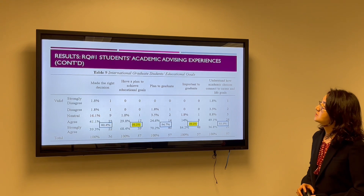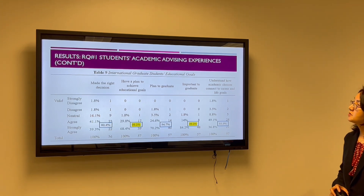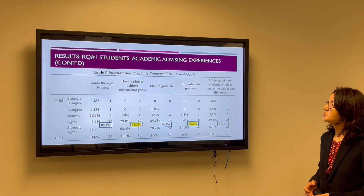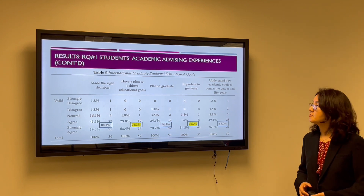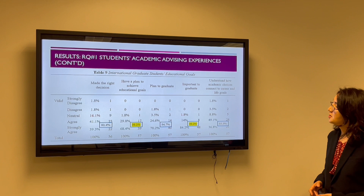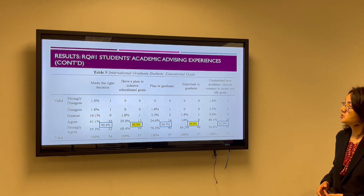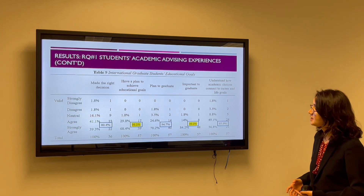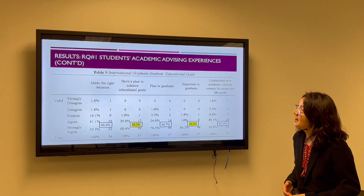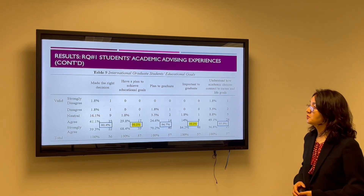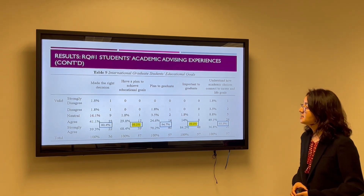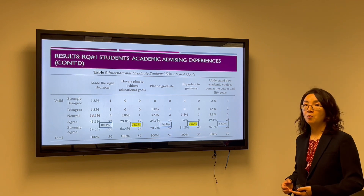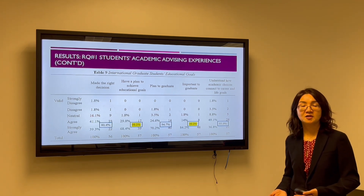Here is a table that shows international graduate students' educational goals, since educational goals is one of the major academic advising experiences. We can see that international graduate students have a very strong will to graduate — 98% feel it is important to graduate, 98% have a plan to achieve their educational goals, and 95% plan to graduate because that is why they are here — they are here for the degree.